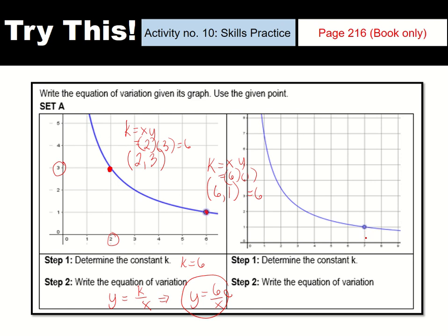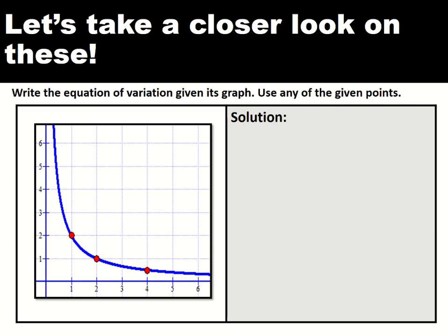How about this? So, we have this point. Our x is 7 and our y is 1. So, our k now is x times y. We have 7 times 1 is equal to 7. So, k is equal to 7. Our equation now is y is equal to 7 over x. That's it.